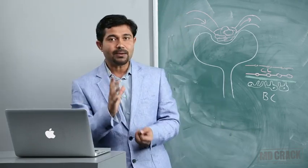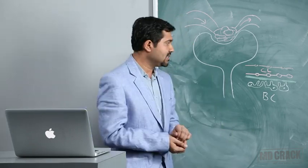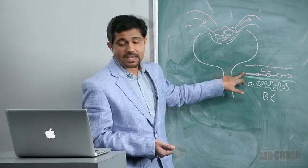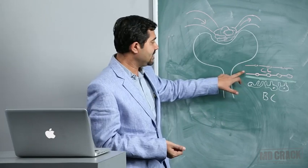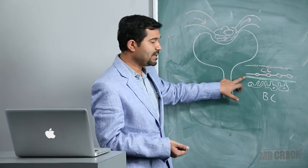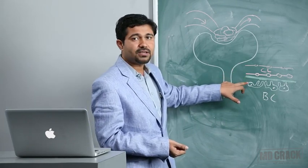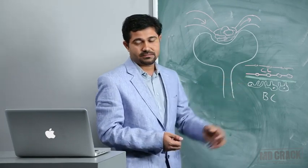So the glomerular capillary membrane is made up of three layers: the capillary endothelium, the basement membrane, and the podocytes.